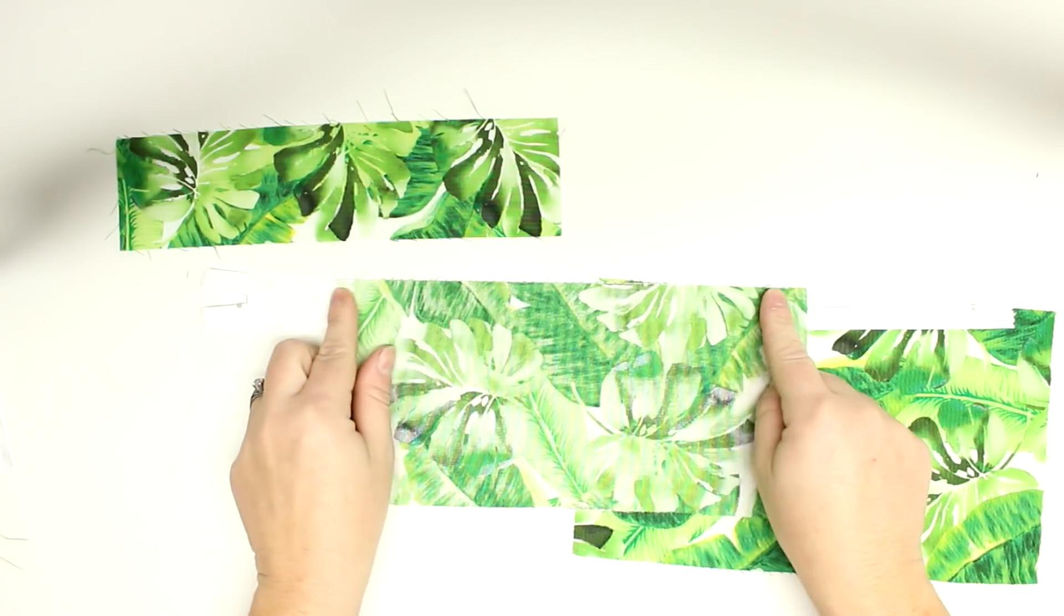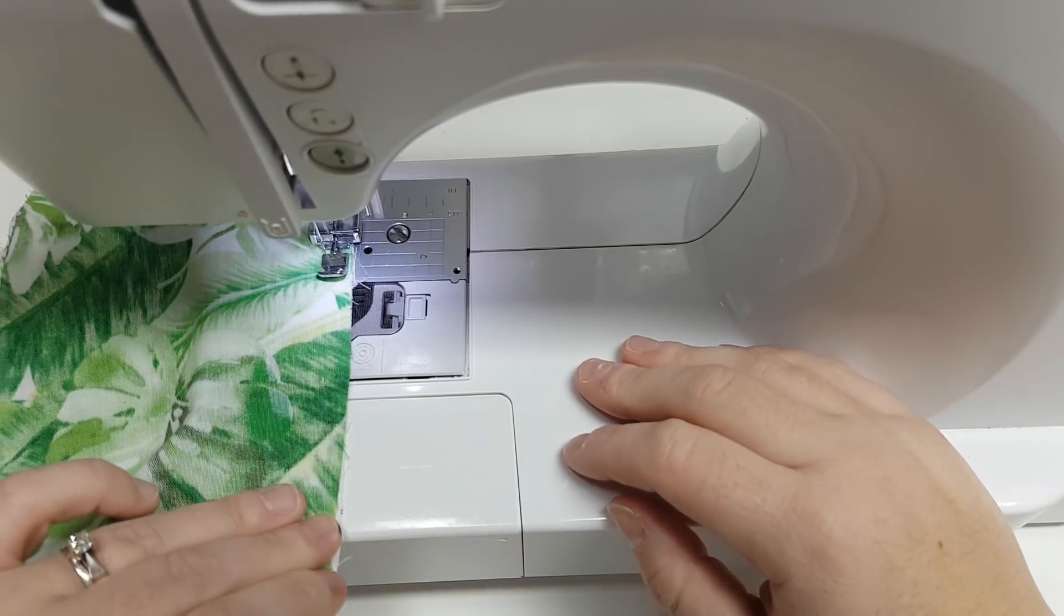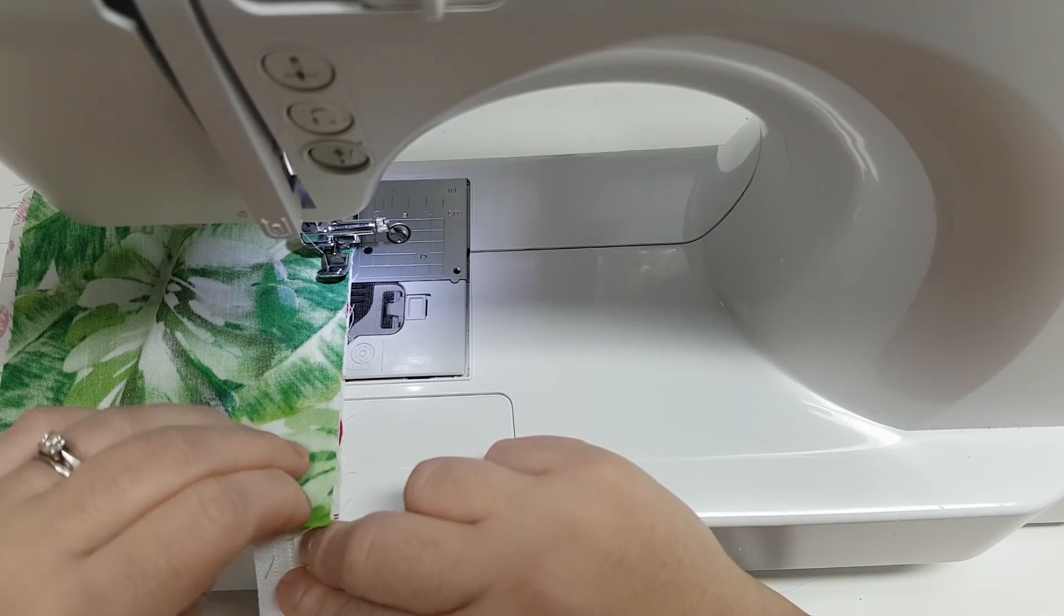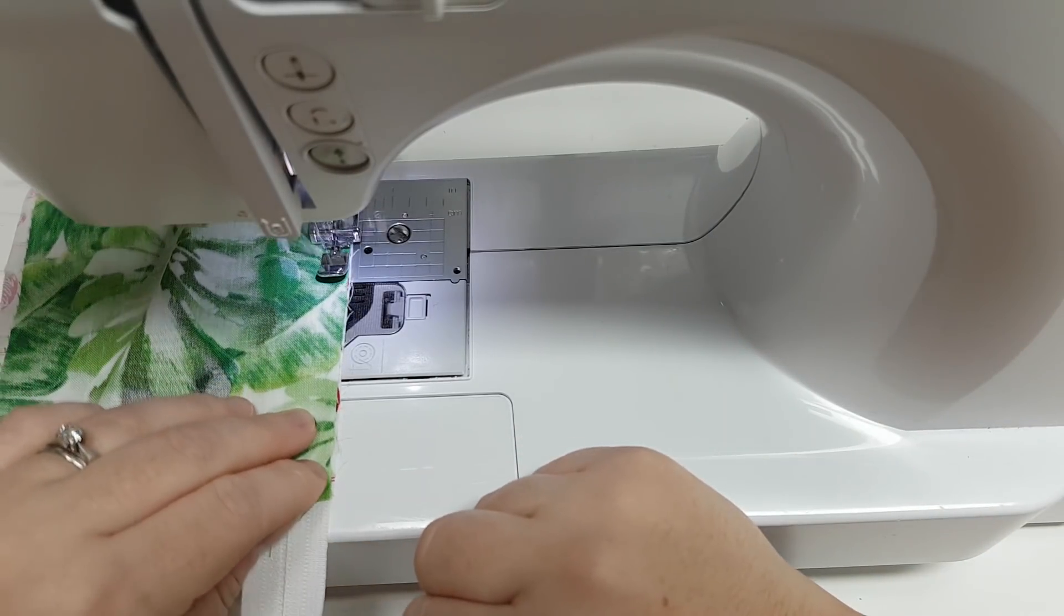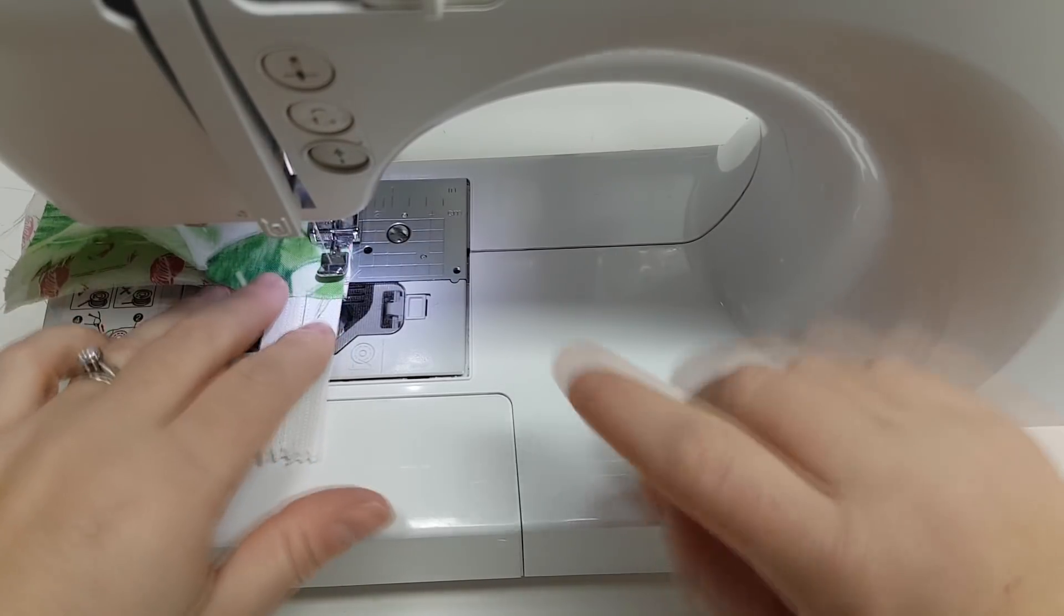I'm going to put the zipper on top of the outer fabric with the zipper pull down and then put the lining fabric on top with the right sides down. Then we will sew along the zipper to install it.